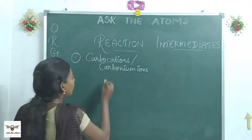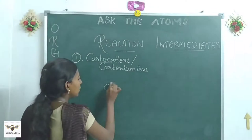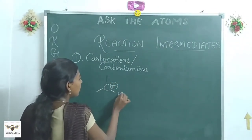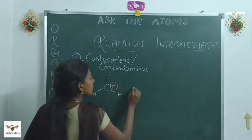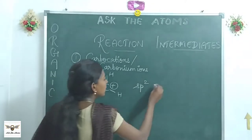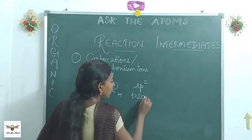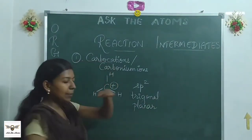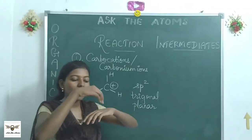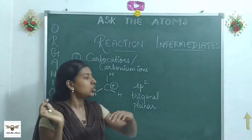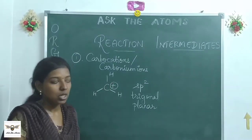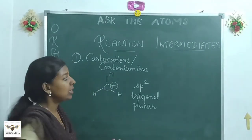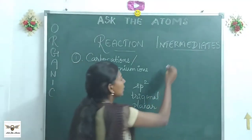A simple carbocation — for example, the methyl carbocation — has SP2 hybridization and is trigonal planar in structure. You have one carbon with three hydrogen atoms arranged in a plane, and the carbon carries a positive charge. This is the carbocation. It carries a positive charge and is formed in a heterolysis reaction.